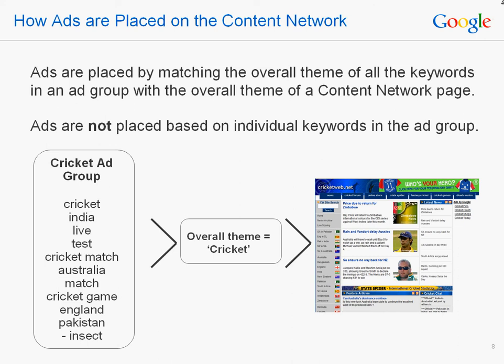Later in this presentation, we'll go into more detail about how to create content-only keyword lists so that you can have your ads show on the types of sites you want. It's important to remember that ads placed on our content network this way use a cost-per-click pricing model, so you don't pay unless someone clicks on your ad.